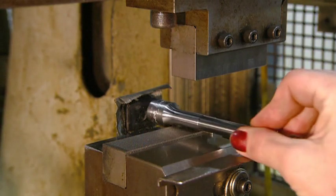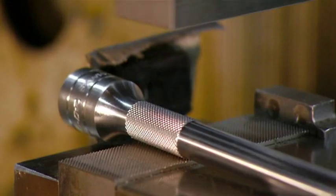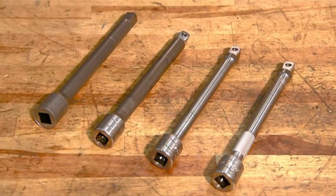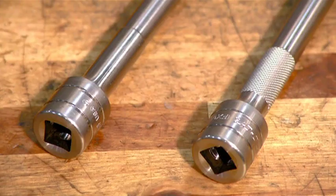Next, a rolling stamp cuts a knurled texture into the socket wrench extension, creating a much less slippery surface to hang onto.